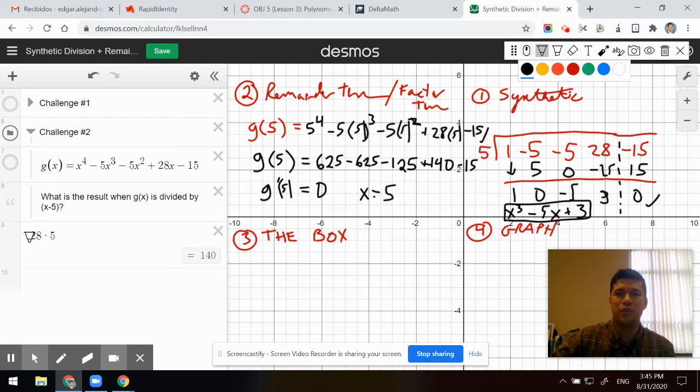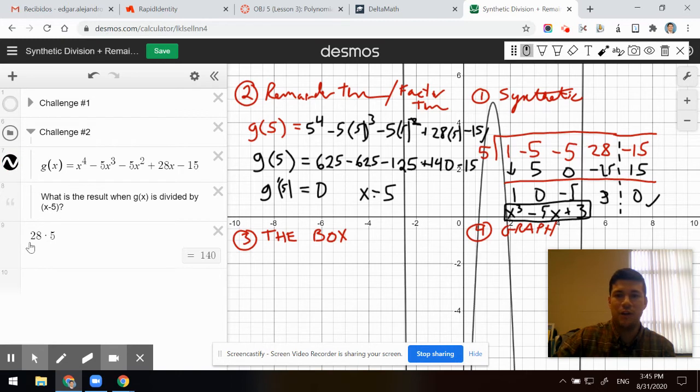All right, which we are now going to verify graphically. When I graph this, guess what? It crosses the x-axis here at x equals 5.